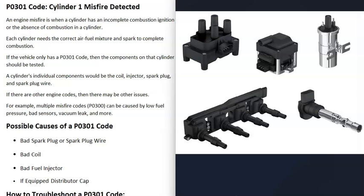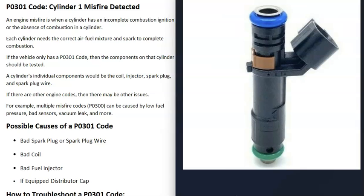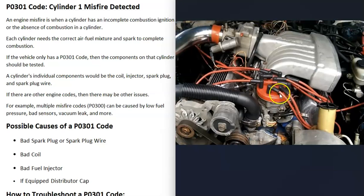The next thing it could be is a bad fuel injector. If the fuel injector has gone bad and it's not working anymore, there might not be fuel going into that cylinder, or it could be spraying incorrectly, spraying sometimes and not other times. And if you happen to have an older vehicle that has a distributor cap, then it can also be a bad distributor cap.